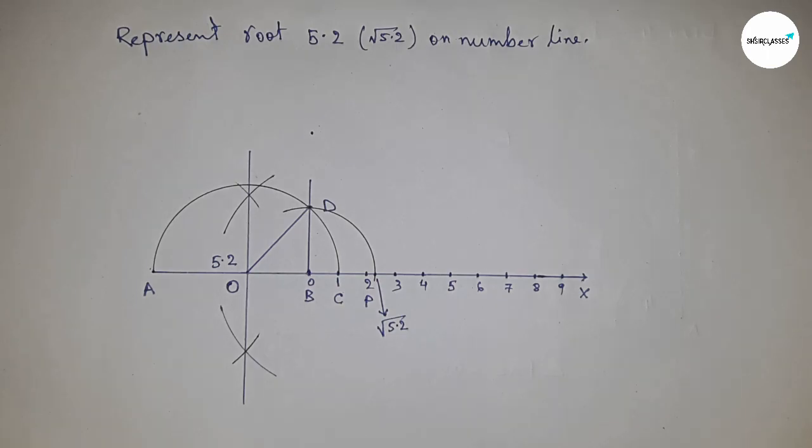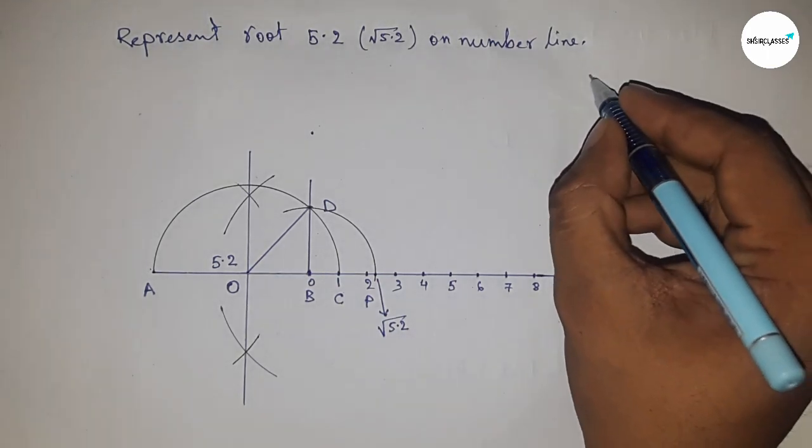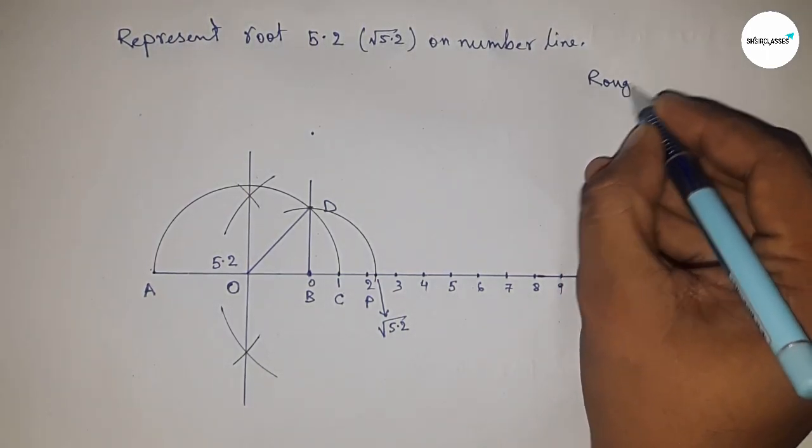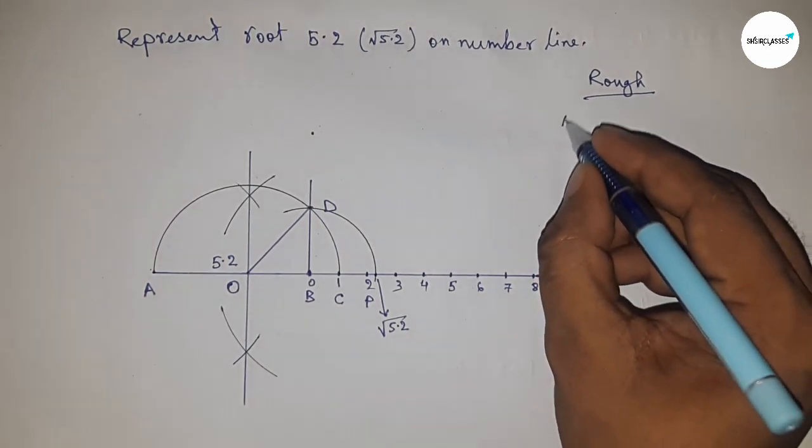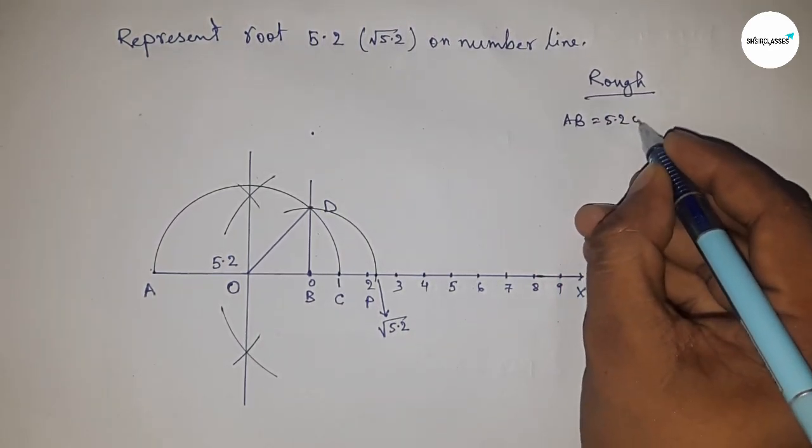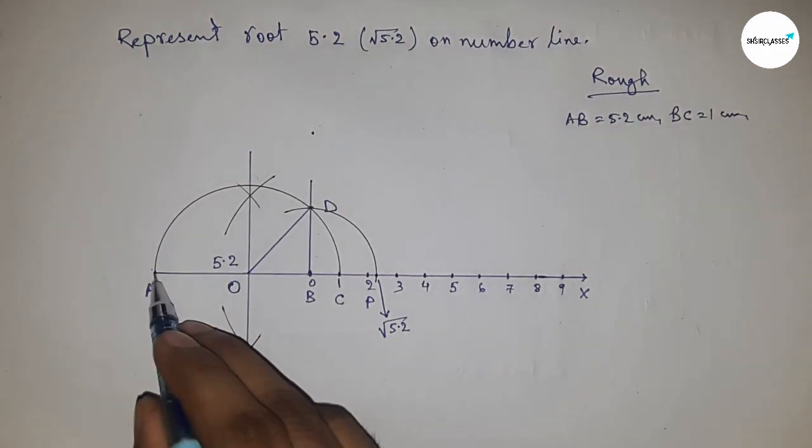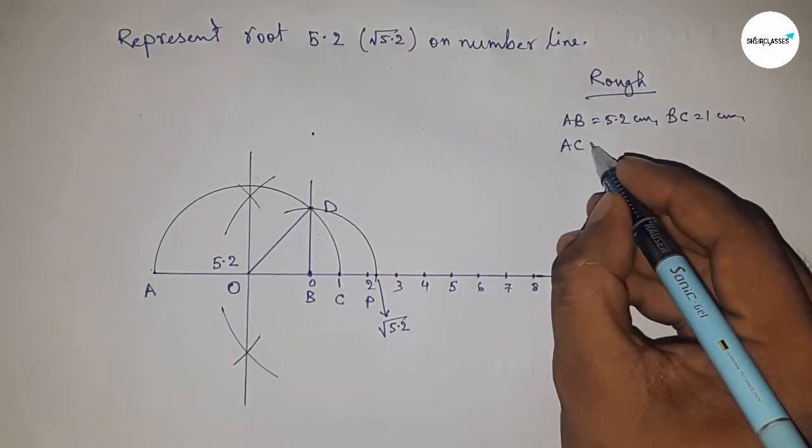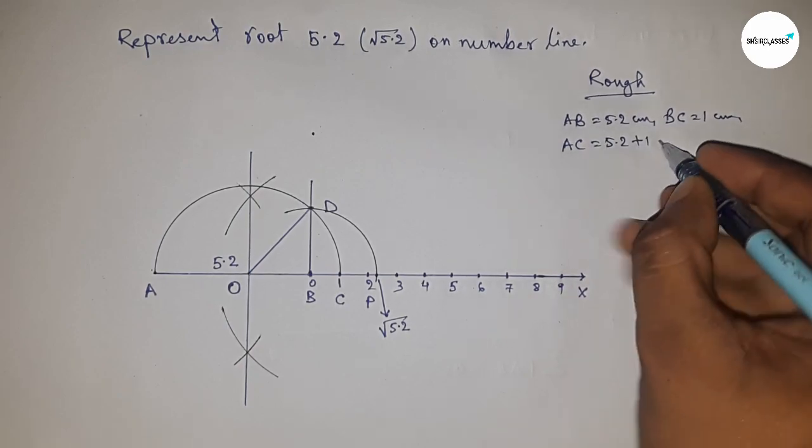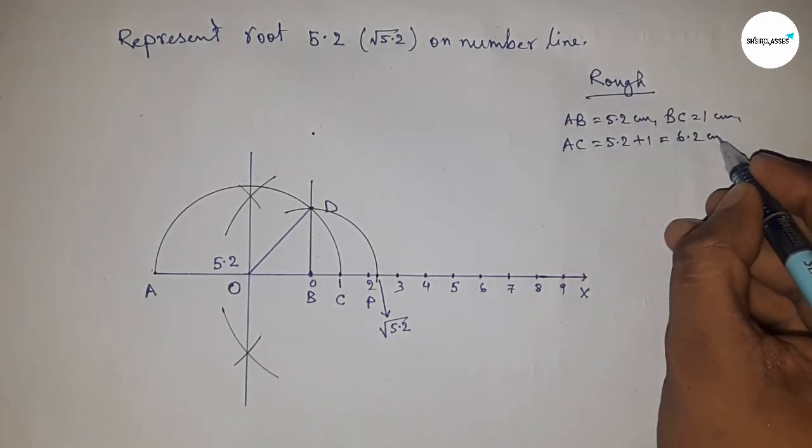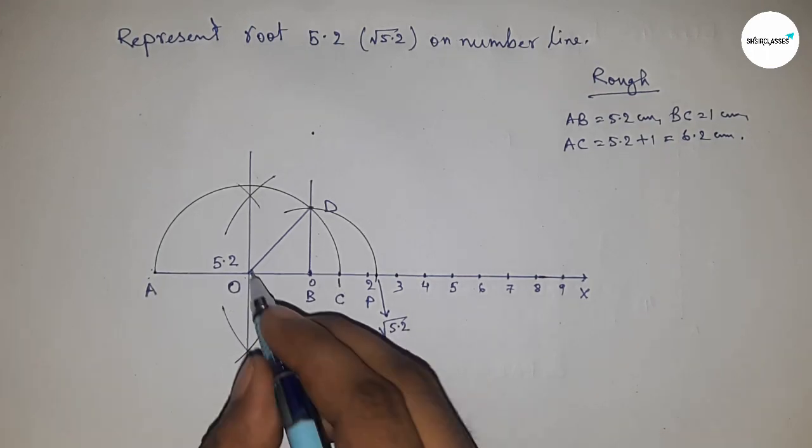Now let's discuss the calculation. Given AB = 5.2 cm and BC = 1 cm, so AC = 5.2 + 1 = 6.2 cm. The radius OA = OC = OD = 6.2 ÷ 2 = 3.1 cm.